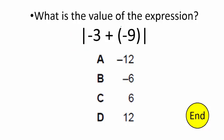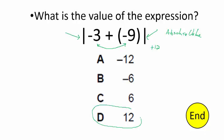What is the value of the expression? We just need to solve this. These bars on the outside are called absolute value. So we solve what's on the inside first: negative 3 plus negative 9 gives you negative 12. Absolute value means whatever you have at the end has to be positive, so you flip the sign to positive 12. Choice D.